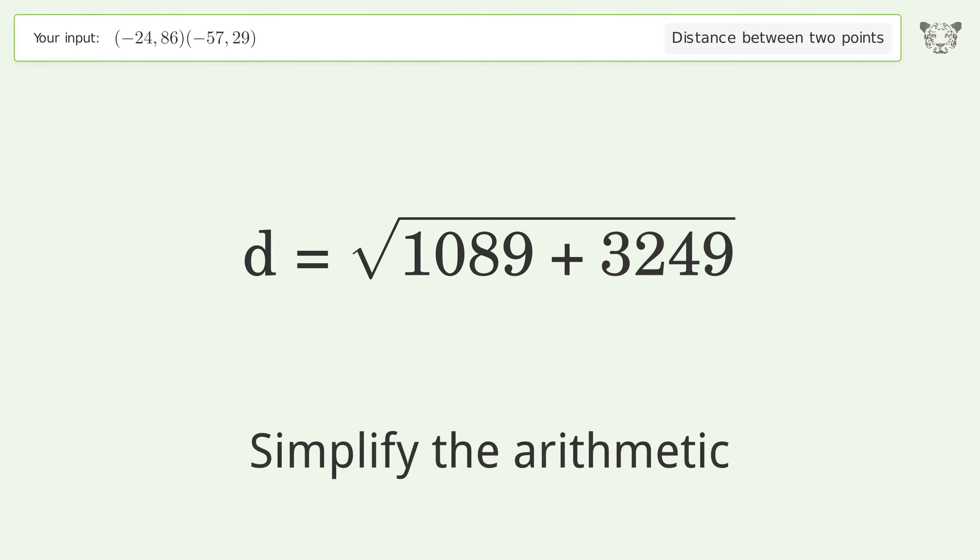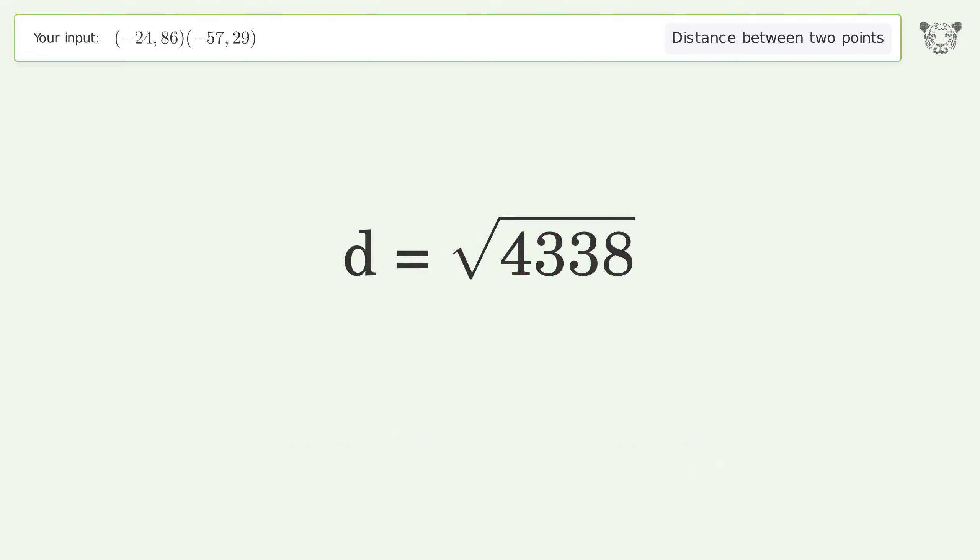Simplify the arithmetic. And so the distance between the two points is the square root of 4338 or 65.863.